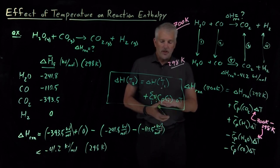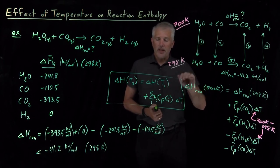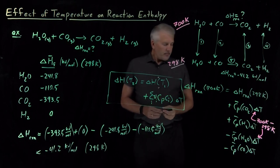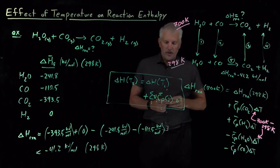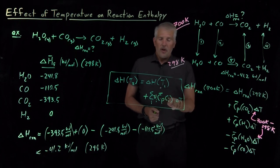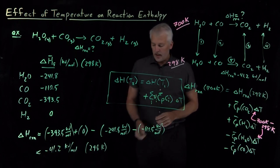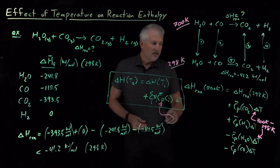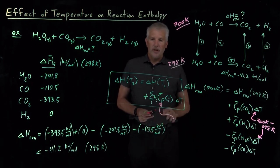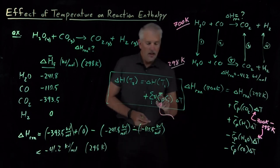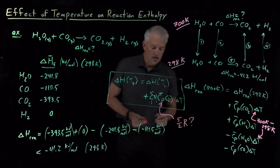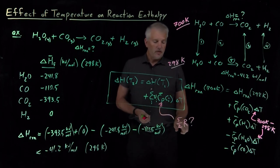Before plugging in numbers, note that these should be molar heat capacities. You might think that the molar heat capacity of these gases — carbon dioxide, H₂, H₂O, CO — which all behave relatively ideally, would each be 5/2 R, as we've seen for the 3D particle in a box.